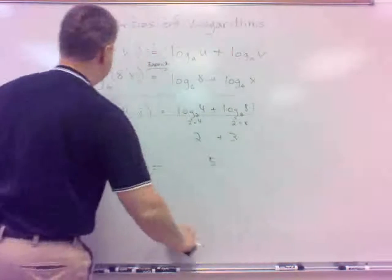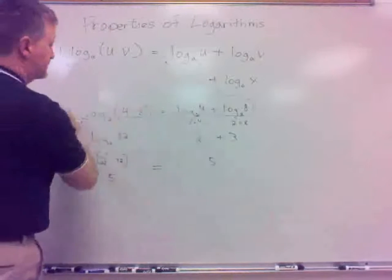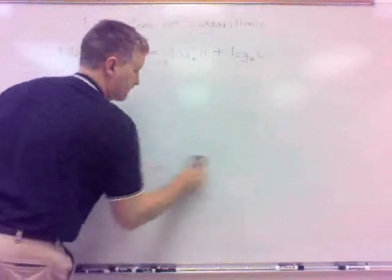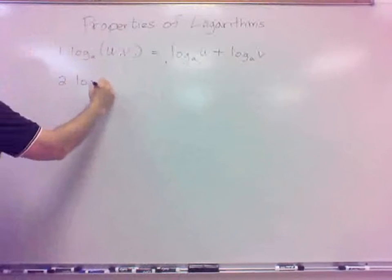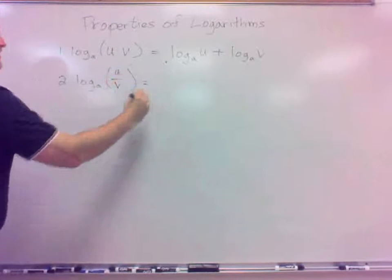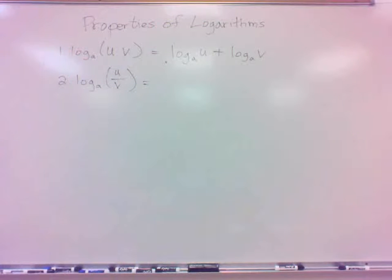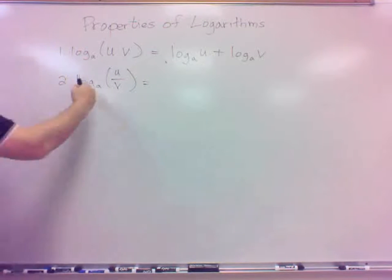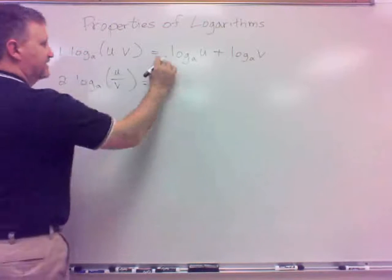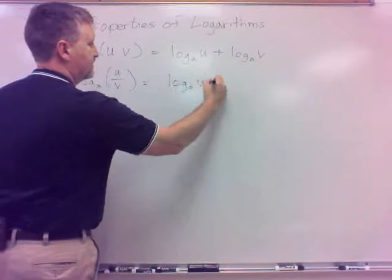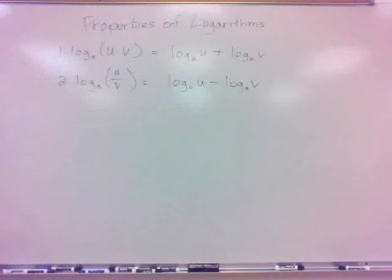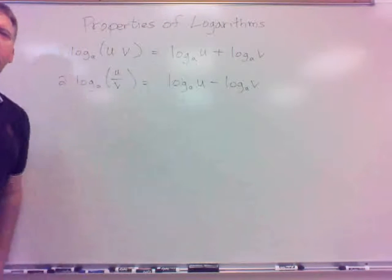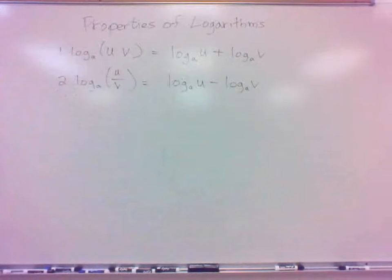Property 2: if U times V inside gives adding, then log base A of U divided by V gives subtraction. If we expand that one logarithm into two logarithms, it's log base A of U — the top — minus log base A of V.